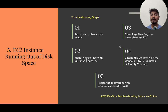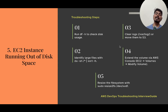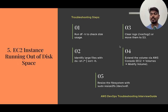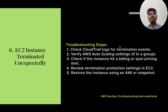If the disk space issue is still not resolved after clearing logs, extend the volume size. Go to the EC2 instance, modify the volume, and increase its size or add an extra volume. After modifying the volume, log into the EC2 instance and run the command resize2fs followed by the file system name — that will extend the volume at the OS level.